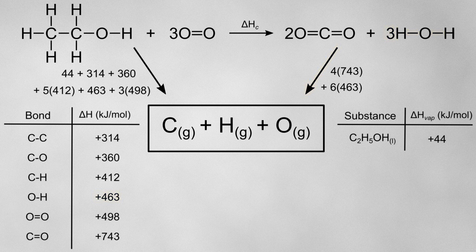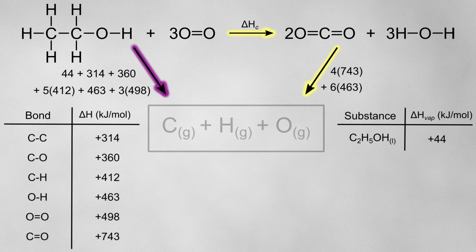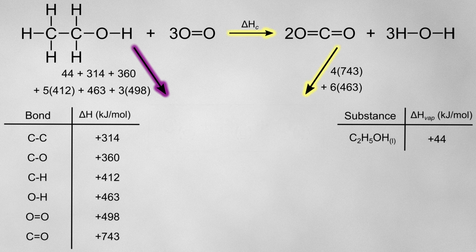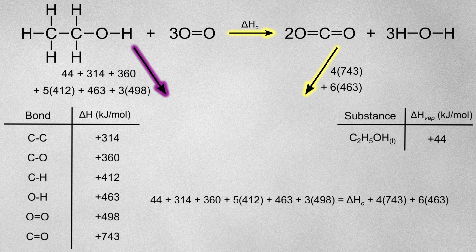Now it's just a case of finding my two routes by following the arrows. One route goes from my reactants directly down to the box, and the other goes from my reactants across to the products and then down to the box. Just like before, I can equate these two routes thanks to Hess's law, and I don't need to worry about changing any of the signs.